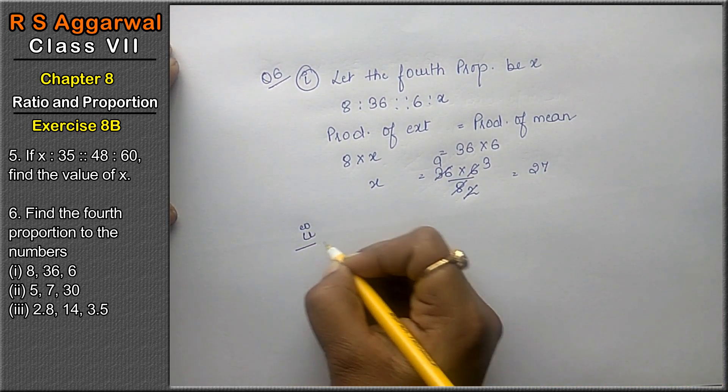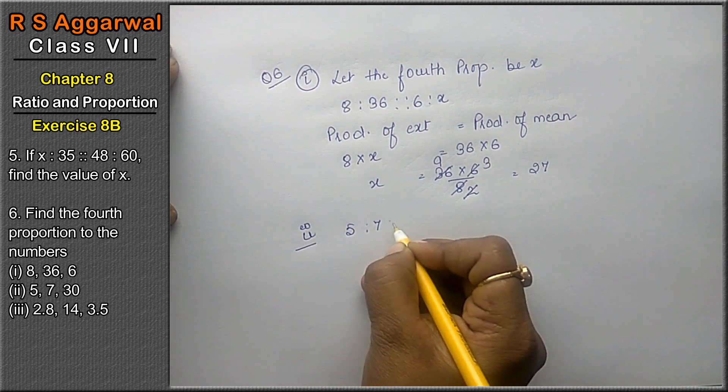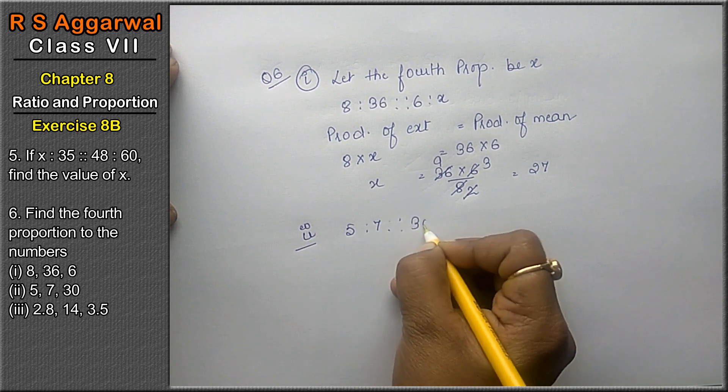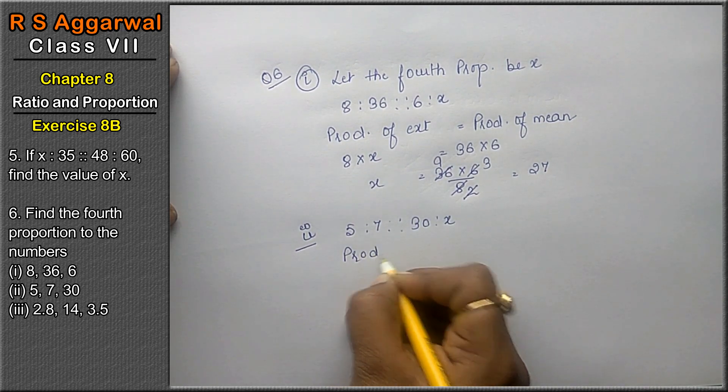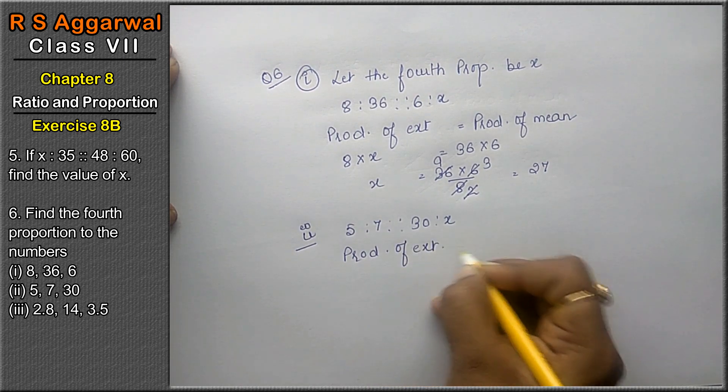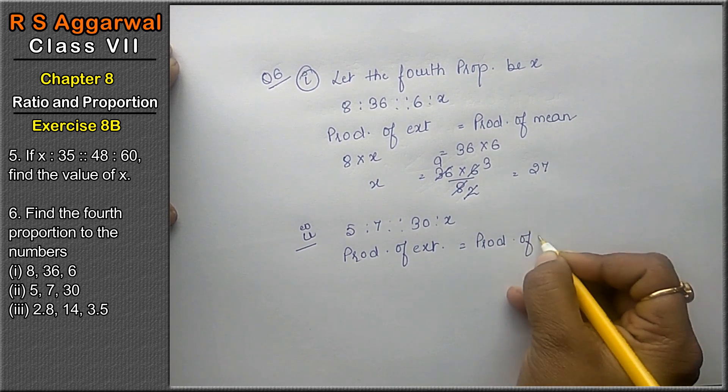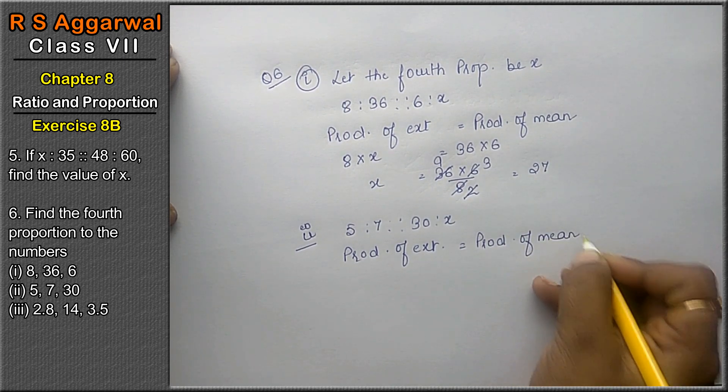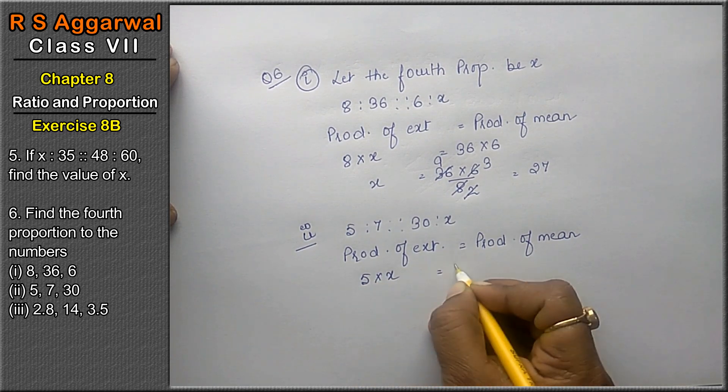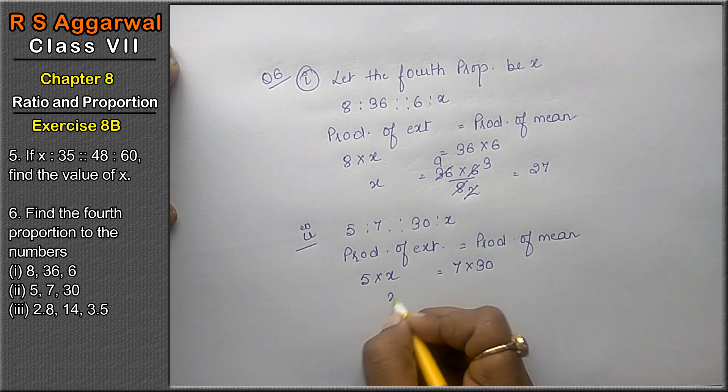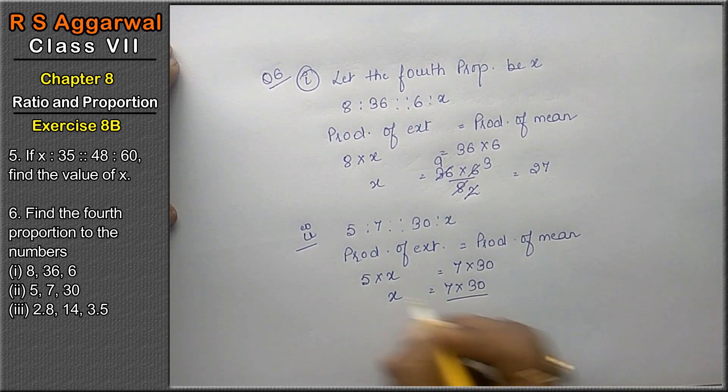Second part, the 4th proportion will be x. 5 is to 7 is to 30 is to x. Now product of extreme is equals to product of mean. Extreme is 5 into x, and mean is 7 into 30. X as it is. So this is 7 into 30 upon 5.